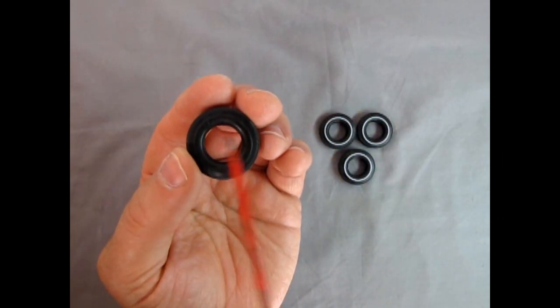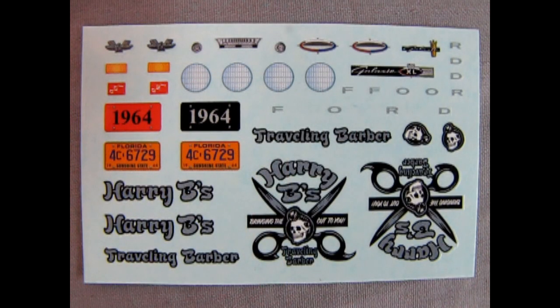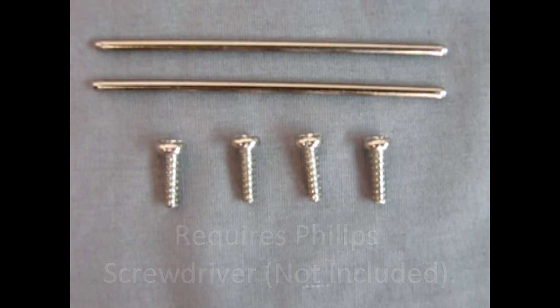Beautiful Firestone tires with white walls. Water release decal sheet featuring Harry B's traveling barber shop, 1964 license plates and headlights as well as other body details. And metal screws and axles to put your car on the road.